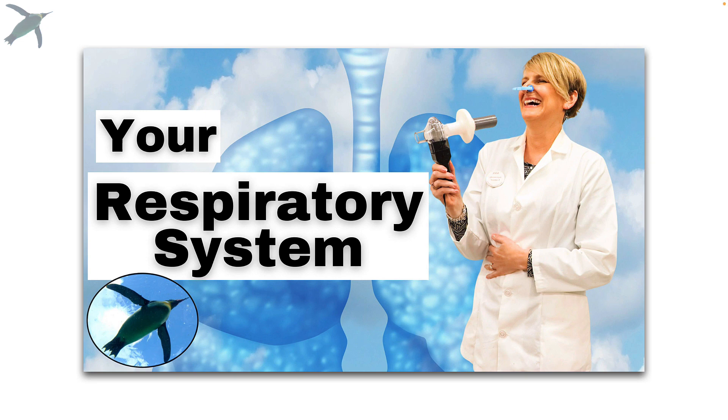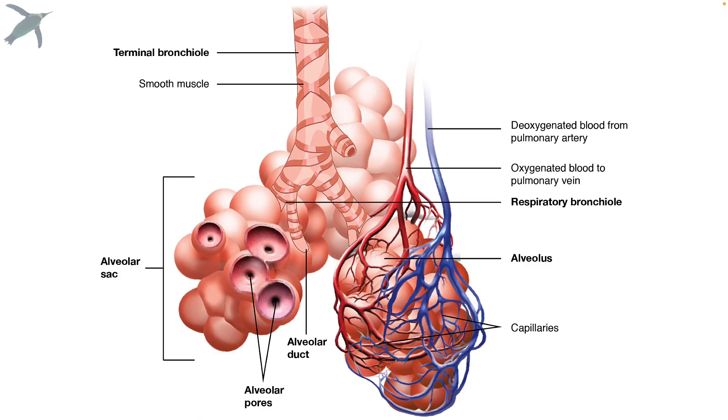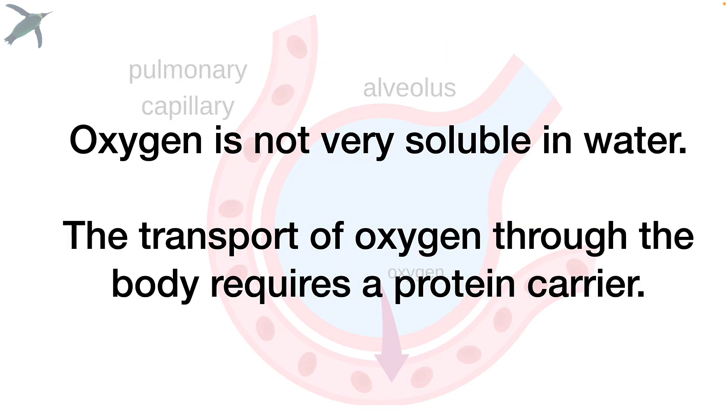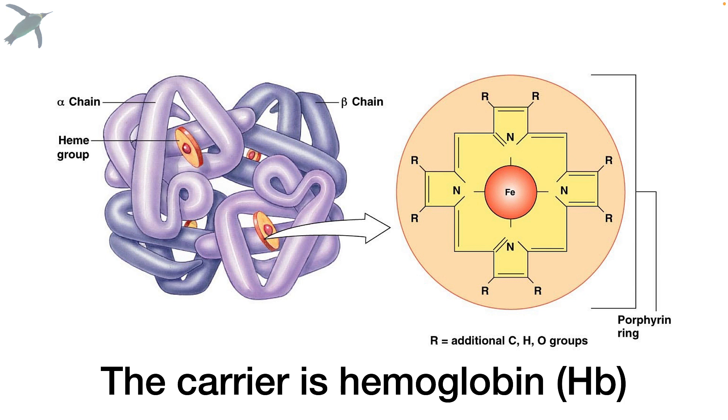I'm assuming some knowledge about the respiratory system, especially having to do with the gas exchange surfaces, these alveoli. And we're going to be looking at oxygen in particular here, because oxygen is not very soluble in water, unlike CO2. So the transport of oxygen requires a protein carrier, and that is what hemoglobin is.